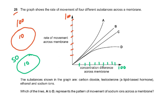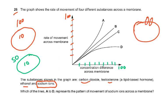Question number 26: the graph shows the rate of movement of four different substances across the membrane. Please look at this question very carefully — it's a very interesting question. The substances shown in the graph are carbon dioxide, testosterone, ethanol, and sodium ions. The only polar molecule is sodium ions, and that will not pass the phospholipid bilayer, so it will need a channel protein. Channel proteins will become the limiting factor, and that is why this part levels off. The concentration difference across the membrane: look at this — 1, 10; look at this — 50, 10.